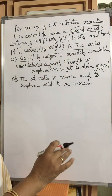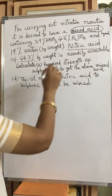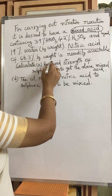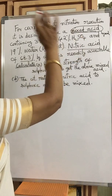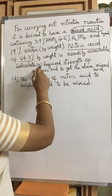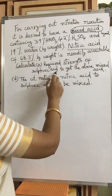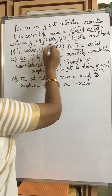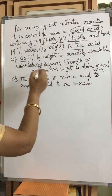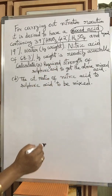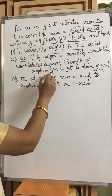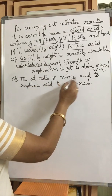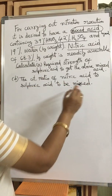Product acid composition is given, not the feed. Also, the nitric acid strength — that is, the purity of the nitric acid — is given. But notice that the purity of H₂SO₄ is not given. So calculate: (a) the required strength of sulfuric acid to obtain the above mixed acid, and (b) the weight ratio of nitric acid to sulfuric acid to be mixed.